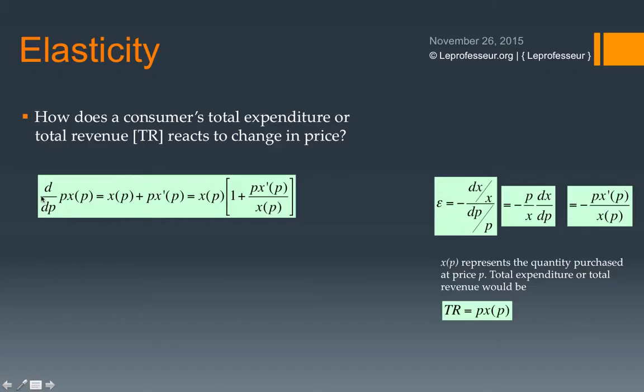Let's take the derivative of total revenue TR = P · x(P) with respect to P. Using the product rule from calculus, dTR/dP = x(P) + P · dx/dP.